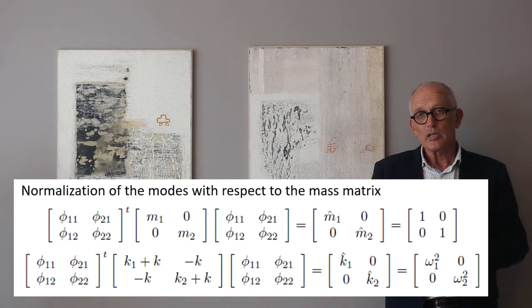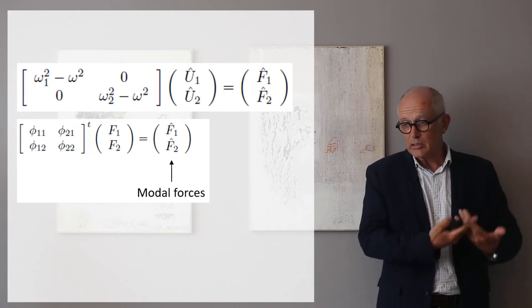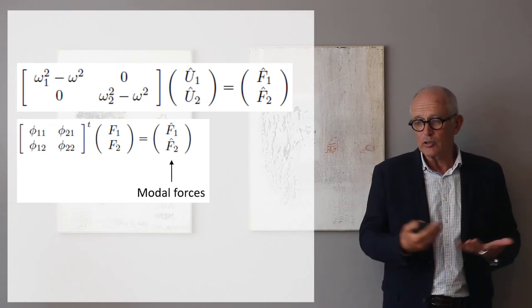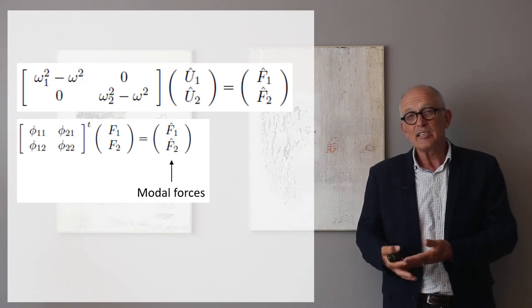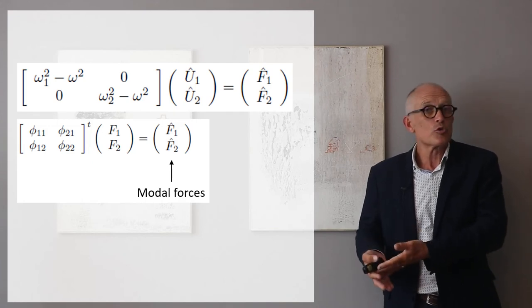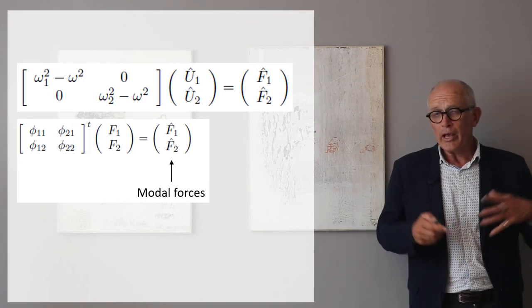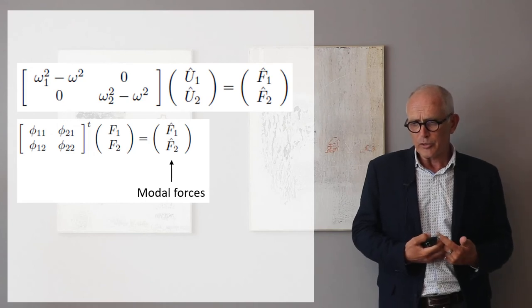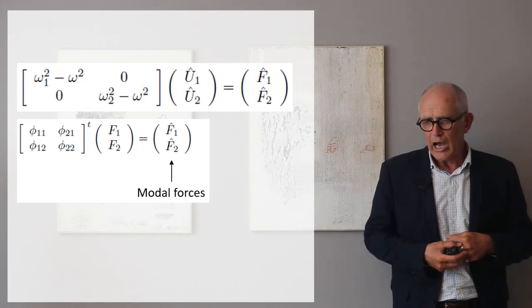So doing all these transformations, just projecting the entire system of equations in the modal space, we get a very simple system of equations which says that a diagonal matrix omega 1 square minus omega square and omega 2 square minus omega square on the diagonal, nothing for the off diagonal terms, multiplying the modal displacement also called the modal participation factor, is equal to a modified force vector which is the projection of the force vector on the modes which is called the modal force vector. And so by projecting the system of equations in the modal space we have created a very simple system of equations which is diagonal where the two degrees of freedom that we now choose, which is the amplitude of mode one amplitude of mode two, are totally decoupled.